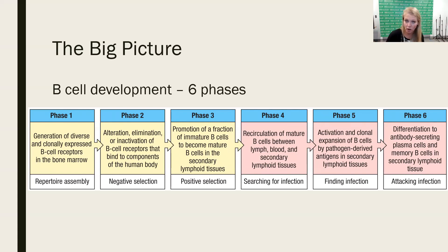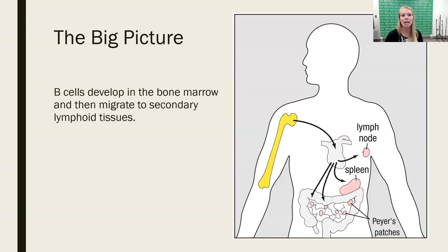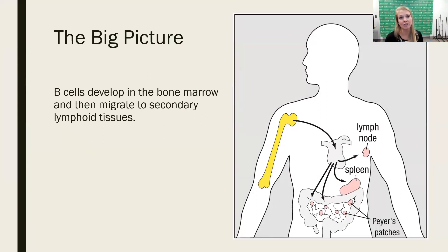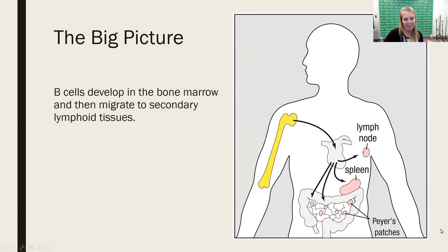Let's set the stage for where all of this occurs — we're really looking at the bone marrow. It's fitting that B-cells develop in the bone marrow. Once they've been created, tested, and educated, they go out to secondary lymphoid tissue and peripheral circulation. That's where we'll be focusing throughout this chapter. We'll stop there and pick up in the next lecture with phase one of B-cell development.